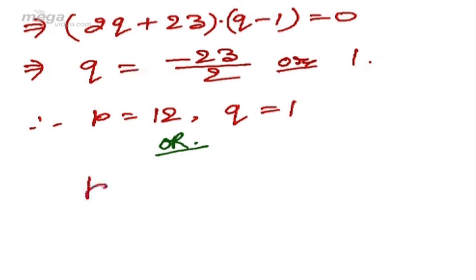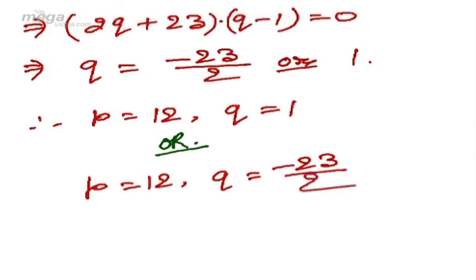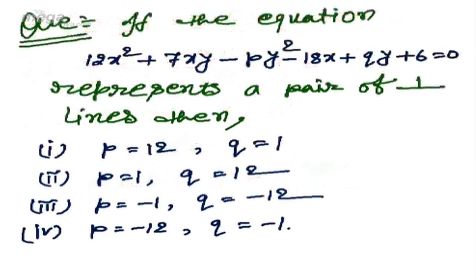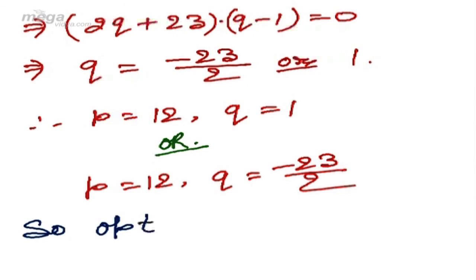So the solutions are p = 12, q = 1 or p = 12, q = -23/2. From the given options, option 1 — p = 12 and q = 1 — is the correct option.